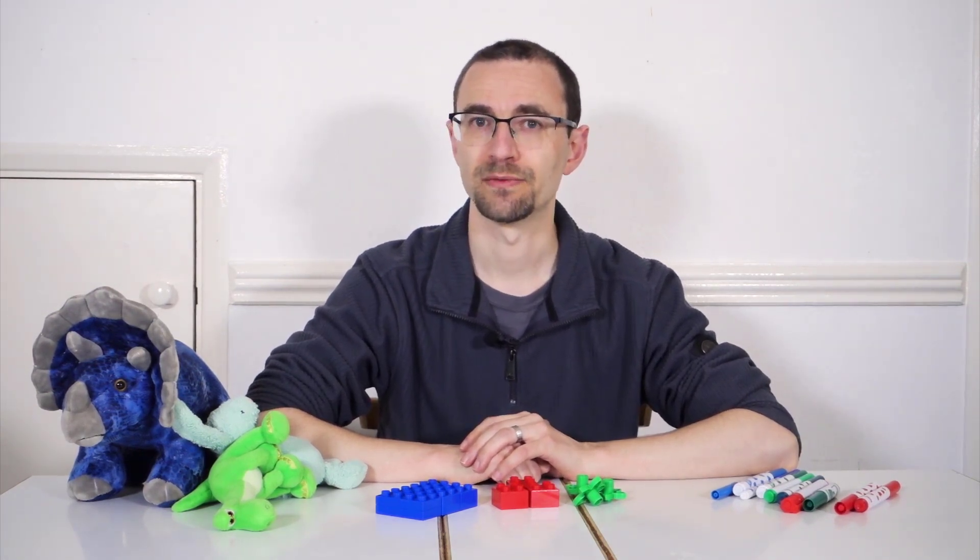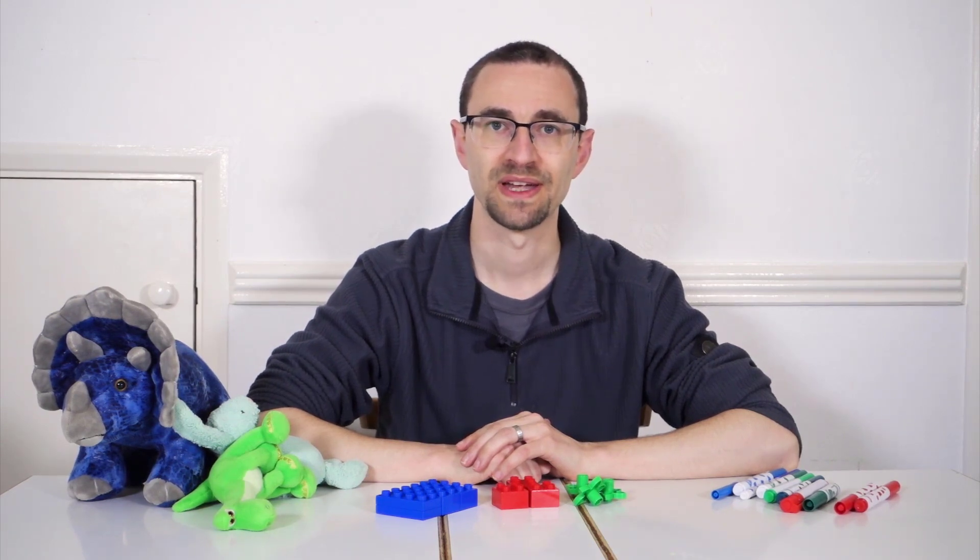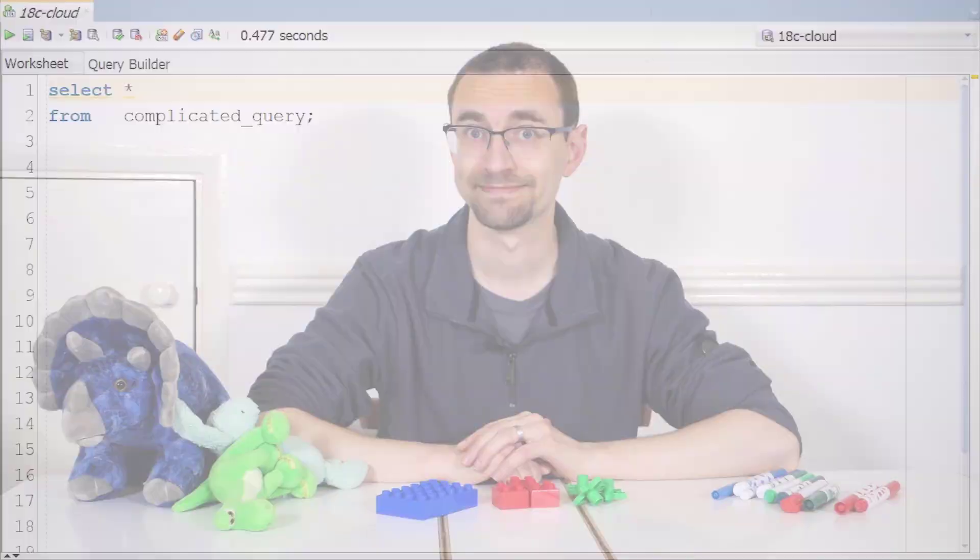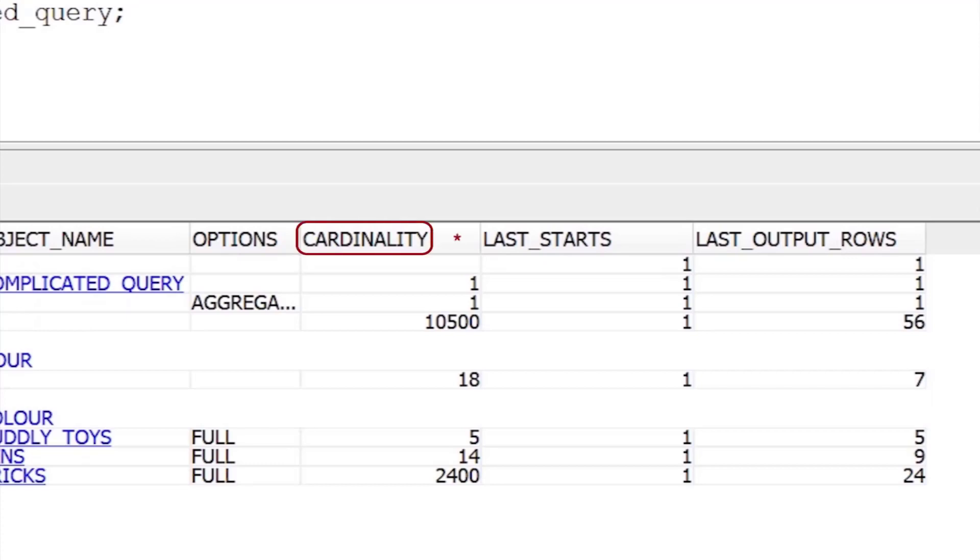The optimizer will then repeat this process for all other tables in the query, and then use these estimates to decide which plan to use. You can check the accuracy for these estimates by seeing if the estimated number of rows for an operation multiplied by the number of times it started roughly matches the number of rows it really returned. When these figures are in the same order of magnitude, it's likely the optimizer has found the best plan available.